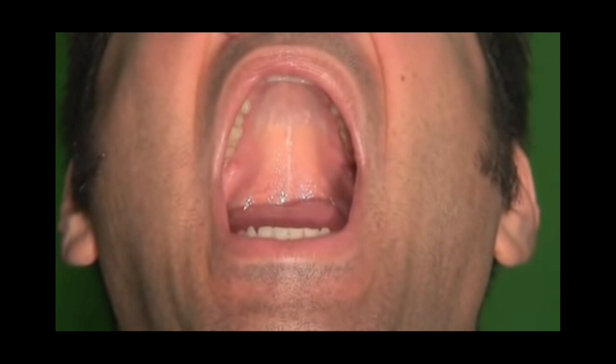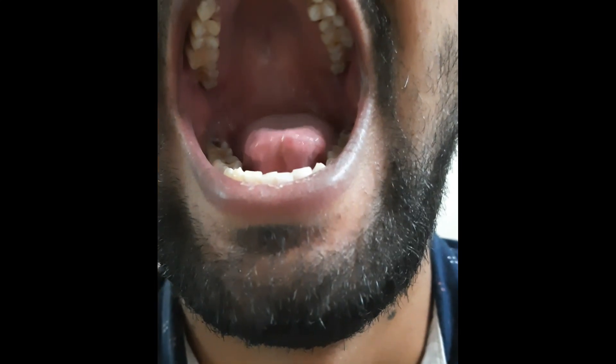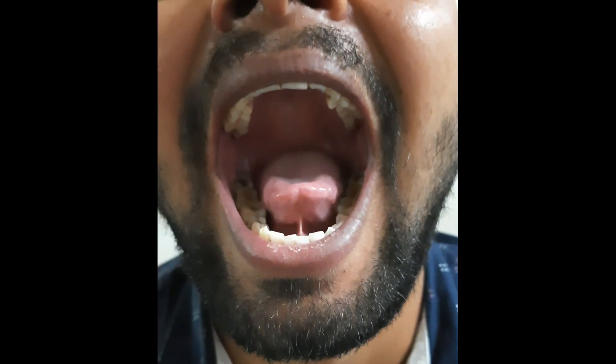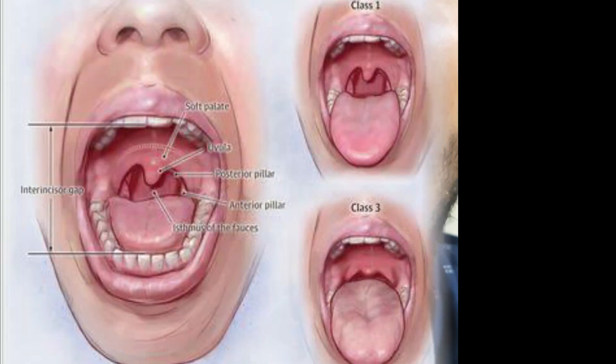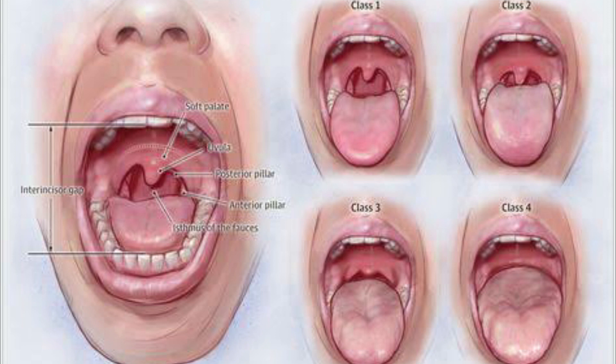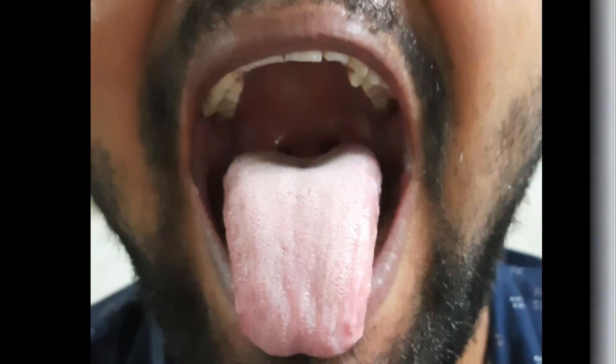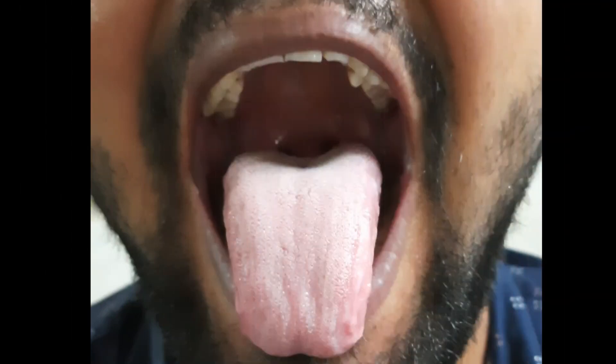Assessment of the palate for narrowness is also done simultaneously. In this patient, the palate and Mallampati grade are seen. Grade 1: faucial pillars, uvula, soft palate, and hard palate are all seen. Grade 2: base of the uvula, soft palate, and hard palate are visualized. Grade 3: soft and hard palate visible. Grade 4: only the hard palate is visible. The patient here has Mallampati grade 2.